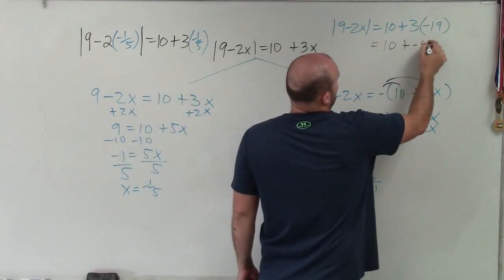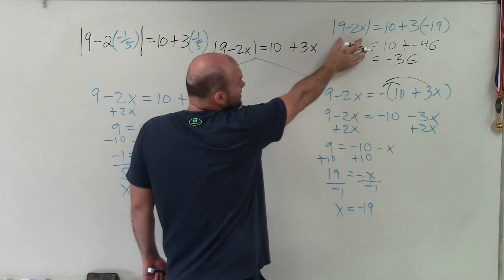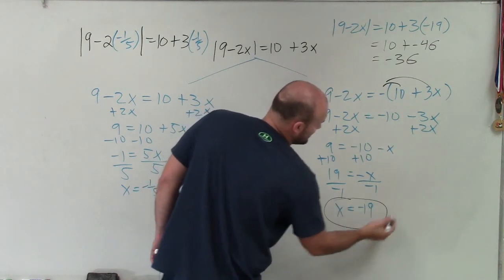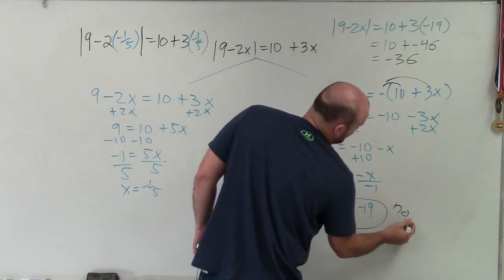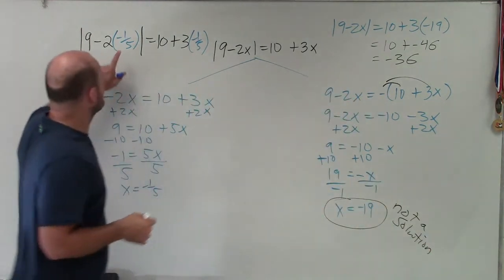So when I do 3 times negative 19, which would be negative 57, I have 10 plus negative 57, which equals negative 47. I don't care what you plug in for this absolute value, it's never going to equal negative 47 because it's negative. So therefore, it is not a solution.